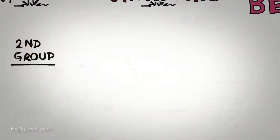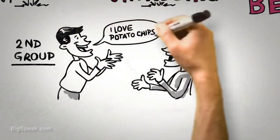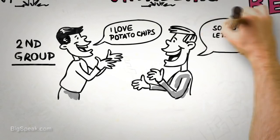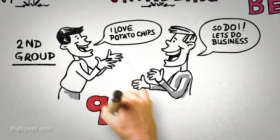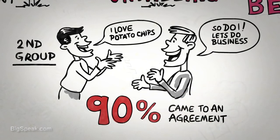A second group, however, were told, before you begin negotiating, exchange some personal information with each other, identify a similarity you share in common, then begin negotiating. In this group, 90% of them were able to come to successful and agreeable outcomes that were typically worth 18% more to both parties.